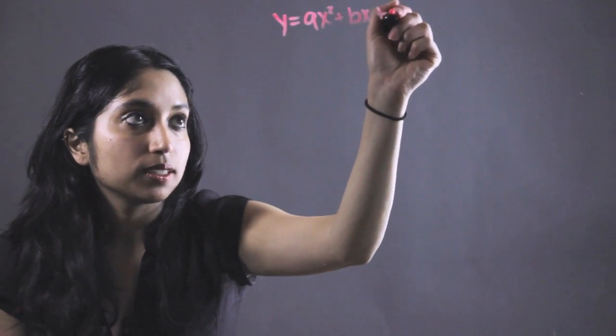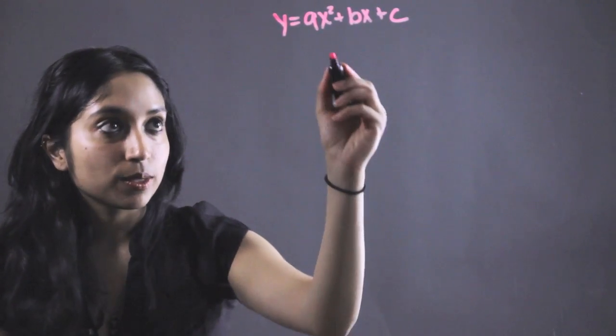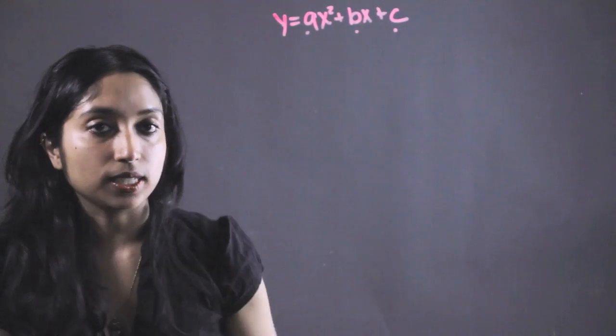So say we're given a quadratic equation that I'm going to write out for you right now: y equals ax squared plus bx plus c. Now we have three unknowns that we need to solve for: a, b, and c.